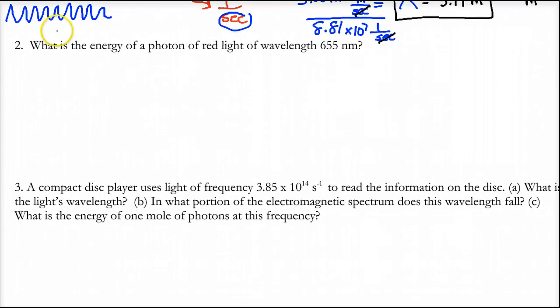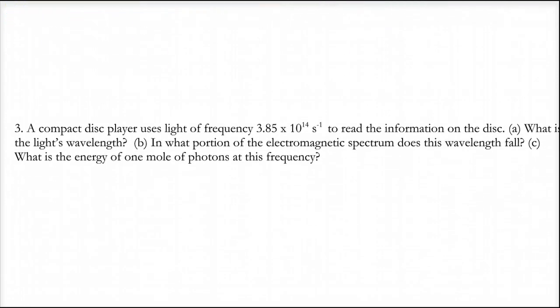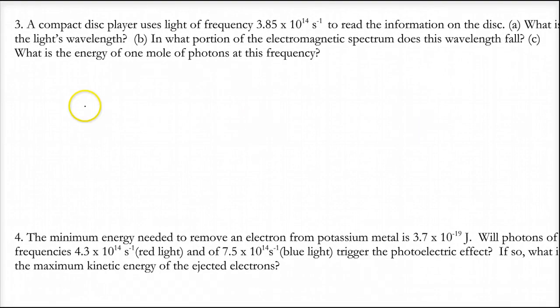Number two we're skipping at this point. And we're going to go to number three. Number three says a compact disc player uses the light of a frequency, that's the negative one is a per second, to read information on a disc. What is the light's wavelength? So now we're solving for wavelength. Well we have C is equal to lambda, the wavelength, times the frequency. And they want to know what is the wavelength. So just before, like before, we're going to solve for wavelength. So wavelength is equal to C over the frequency. So let's go find that. Give you a shot at that now.